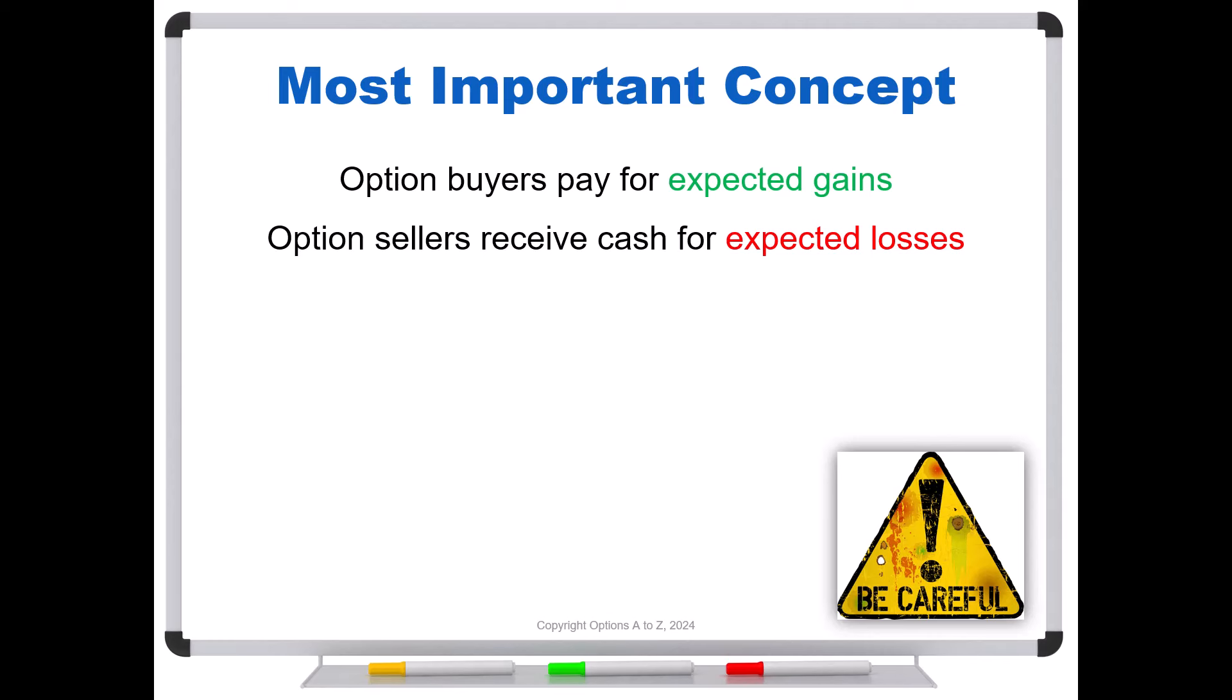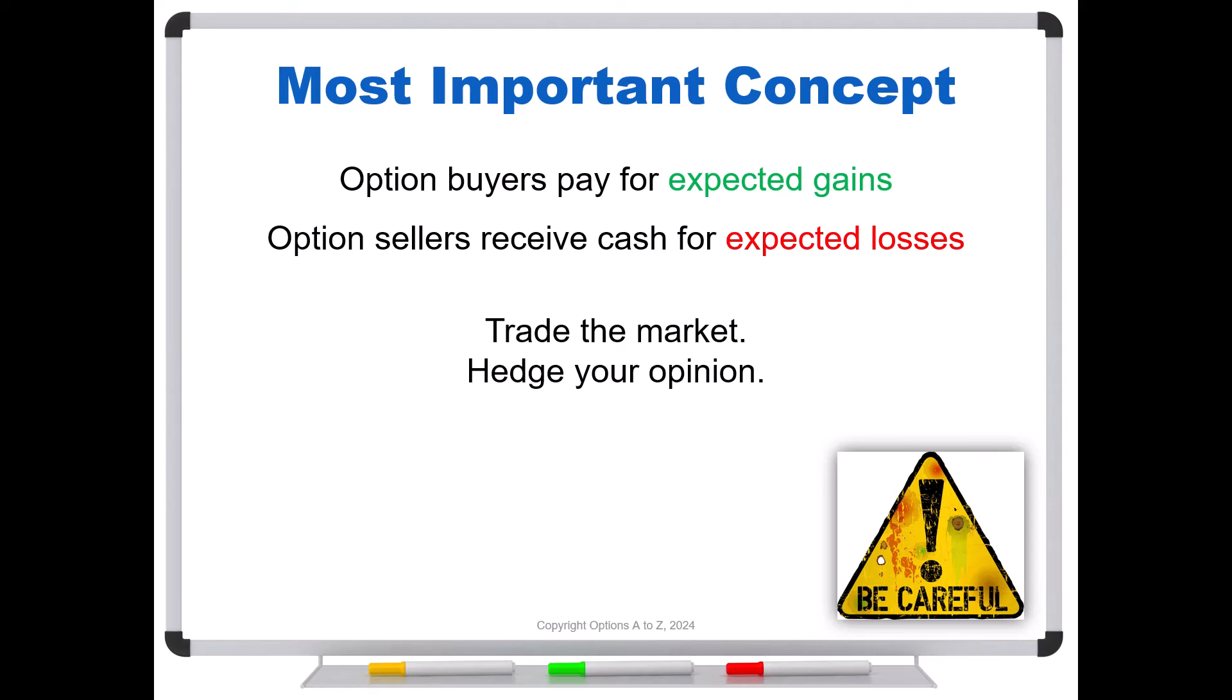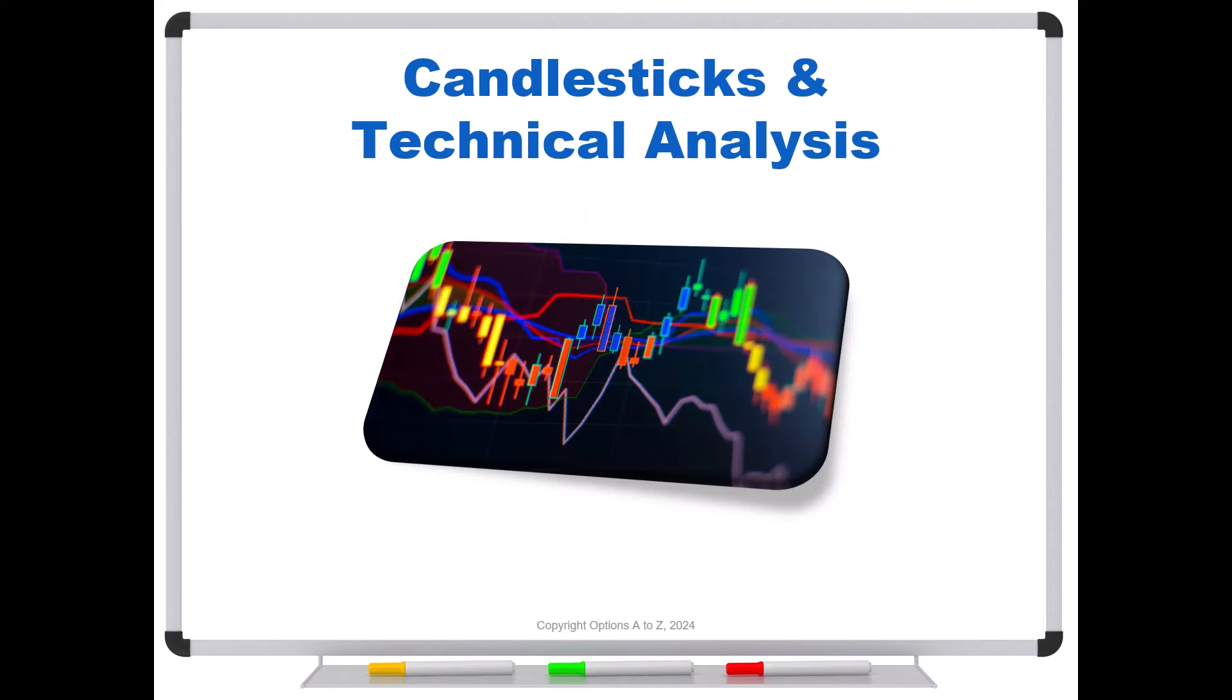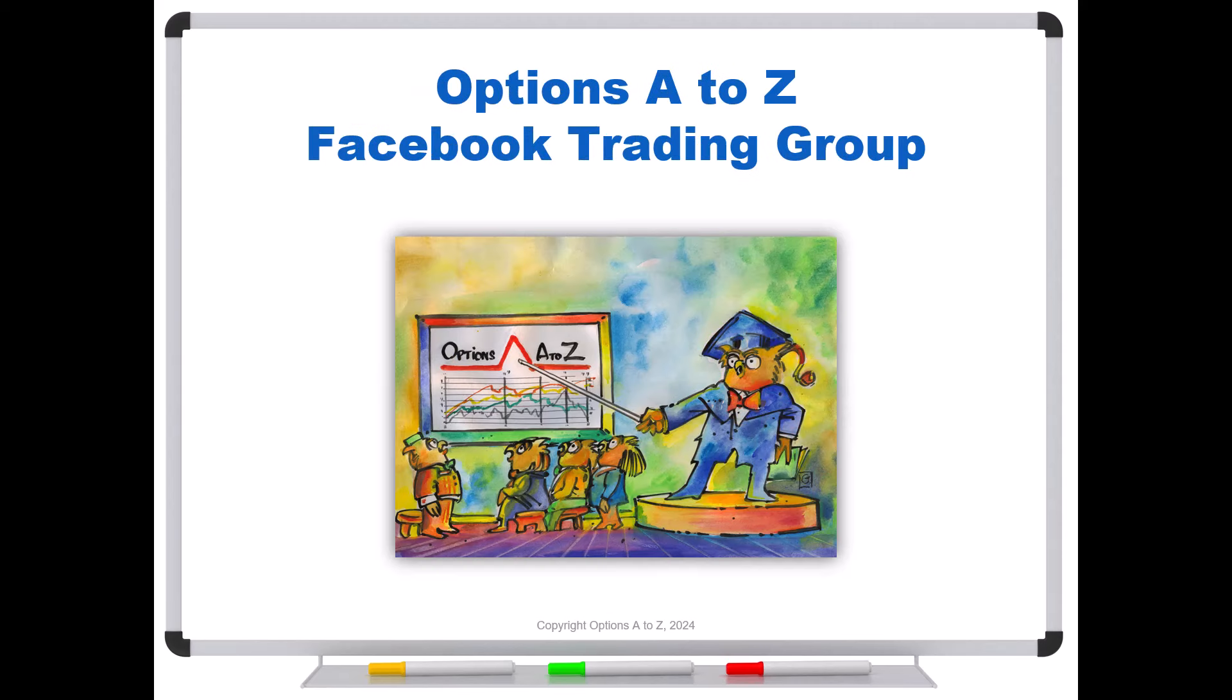So with that in mind, what's a better way to approach the market? Use options for what they were designed to do, and that is to hedge positions. So trade the market, but hedge your opinion. For anyone who'd like to learn more about the arts and science of options trading, please check out the AlphaTrader course, Strategy Lab, and a candlesticks and technical analysis course. It's all at OptionsAtoZ.com. Also, please join us on Options AtoZ's Facebook trading group, and you can find a link in the description below.